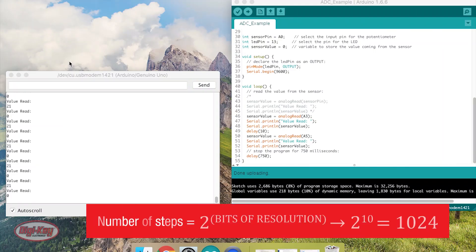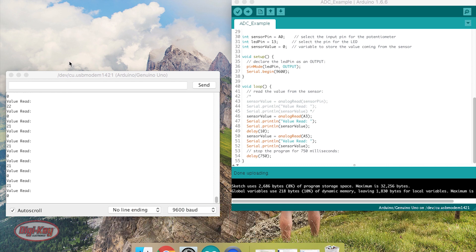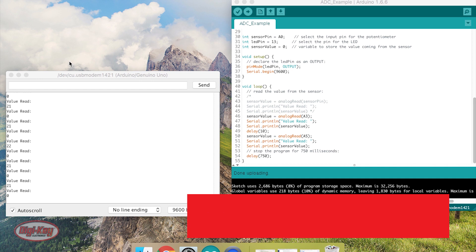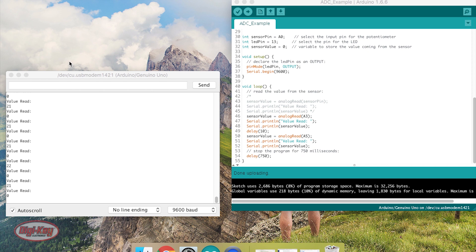For a 10-bit ADC, we'll have 1024 steps that can be detected, 2 to the 10. Our range is 0 to 5 volts, so if you divide 5 by 1024, you get about 4.9 millivolts per step. So we should see the read value increase every time I increase the voltage by about 5 millivolts, which makes sense,